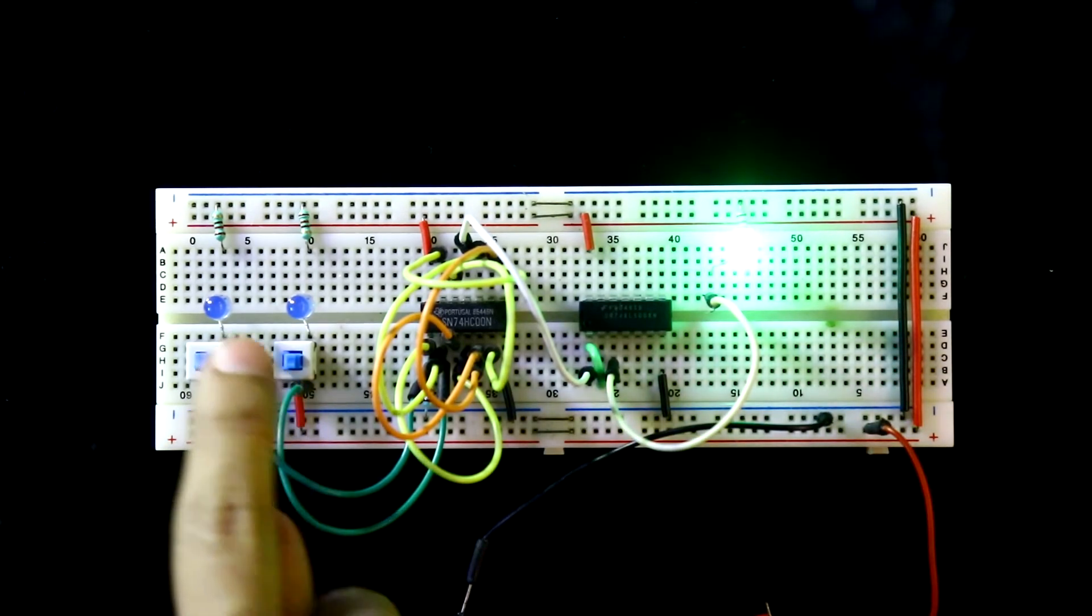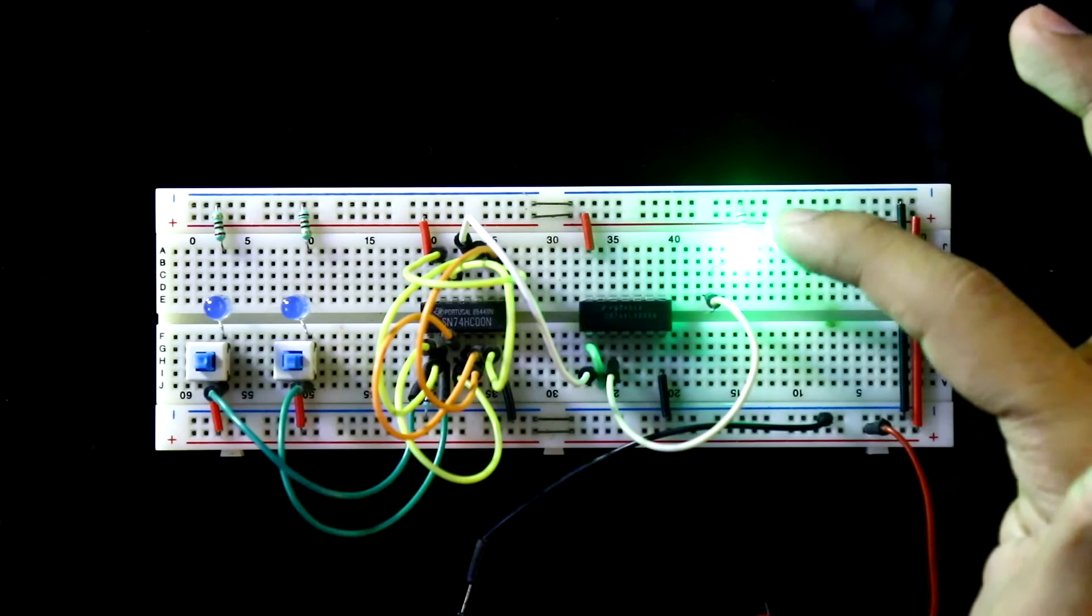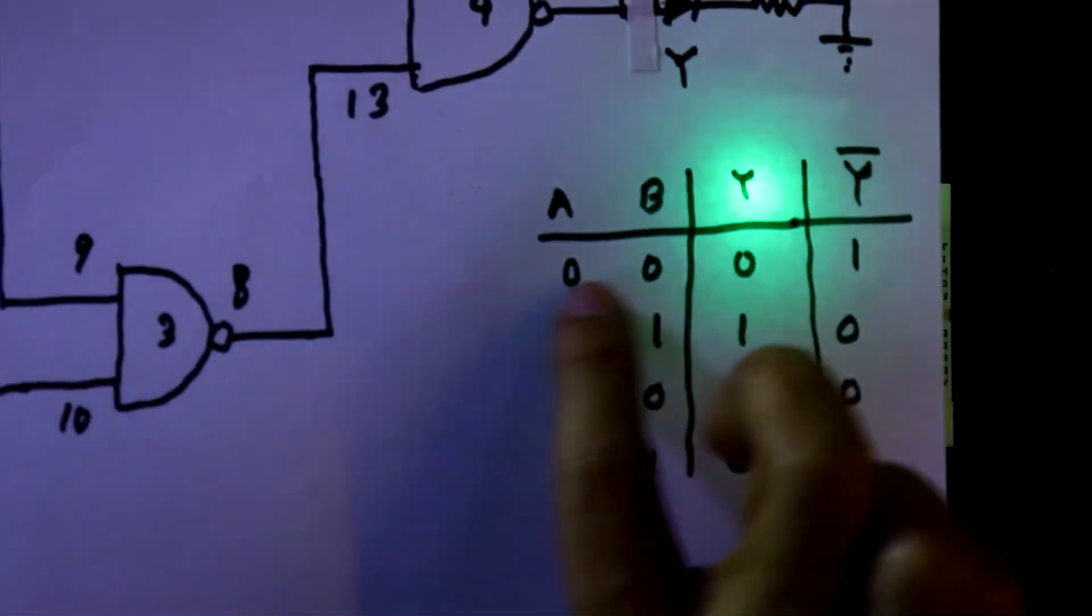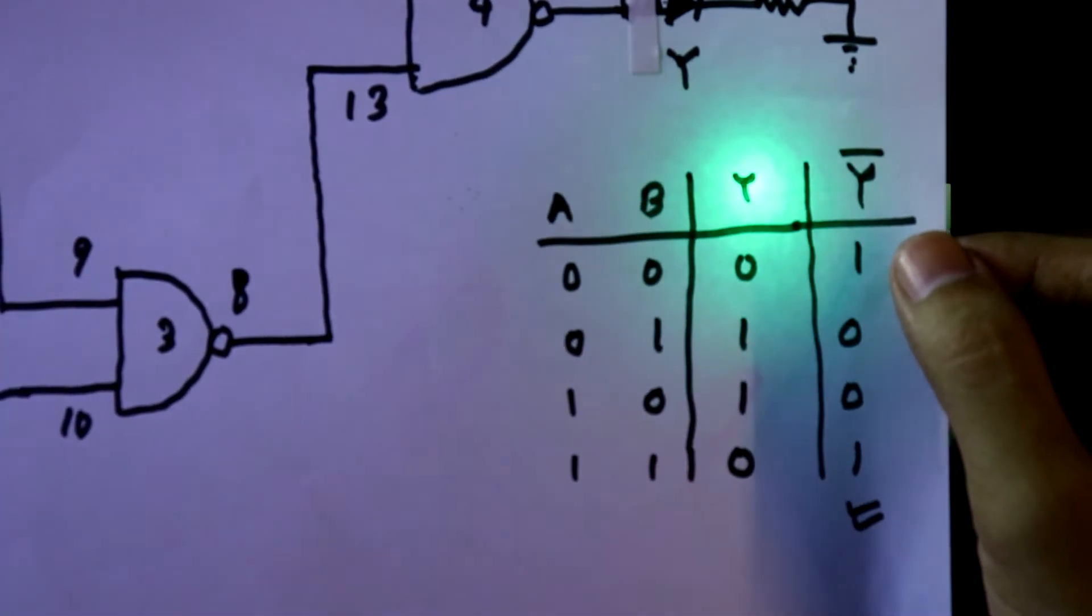As both inputs are 0, 0, so we are getting 1 in the output. Same input means we'll get the output.